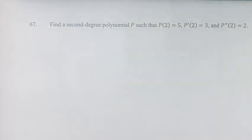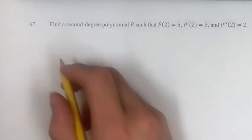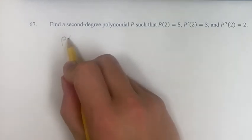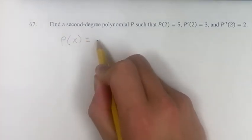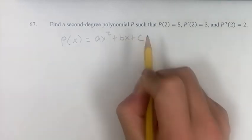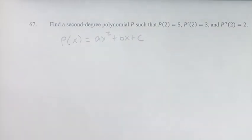Hello, and welcome back to another video. In this problem, we're given that we have some second-degree polynomial, P. So P of X is equal to AX squared plus BX plus C. That's what it means to be a second-degree polynomial.